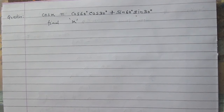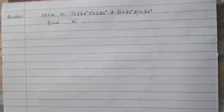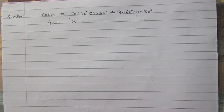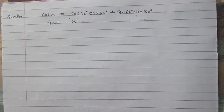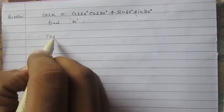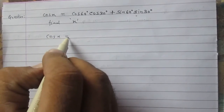We are given that cos x is equal to cos 60° multiplied by cos 30° plus sin 60° multiplied by sin 30°, and we are to find x.